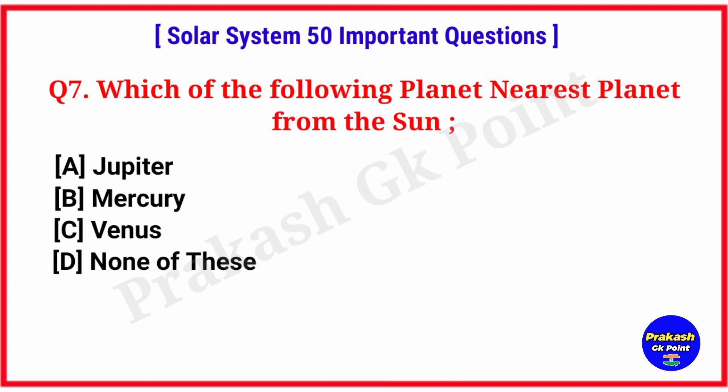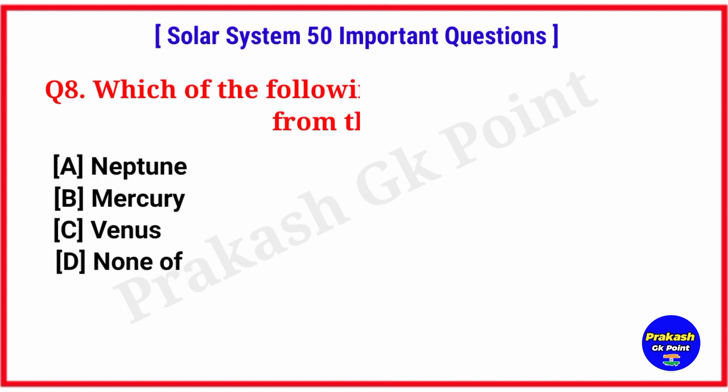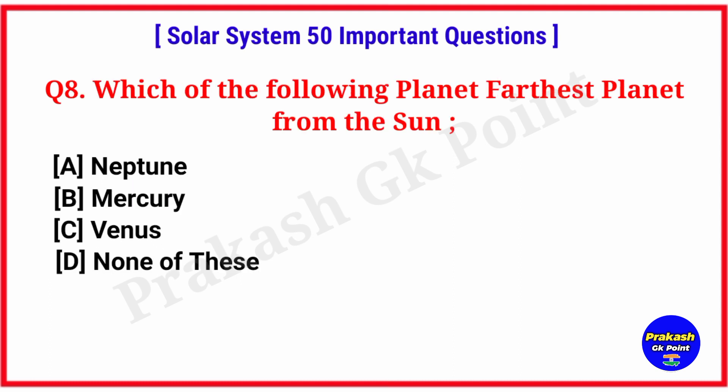Which of the following planets is the nearest planet from the sun? Answer: option B, Mercury. Which one of the following planets is the farthest planet from the sun? Answer: option A, Neptune.